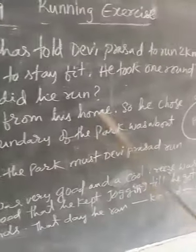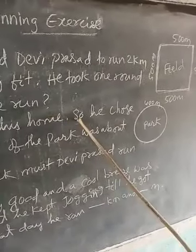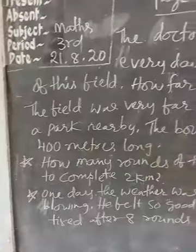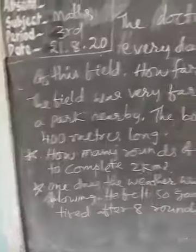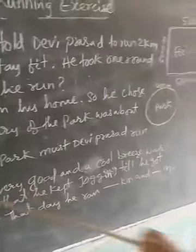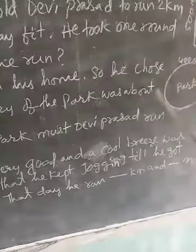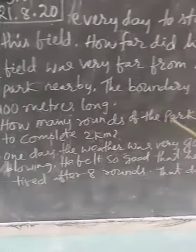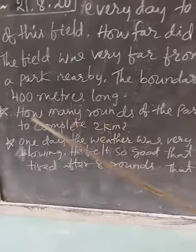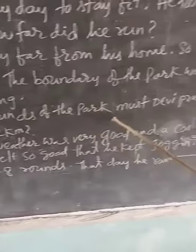The field was very far from his home, so he chose a park nearby. This is the park — it is near his home. The boundary of the park was about 400 meters long. So the total boundary length of the park is 400 meters. How many rounds of the park must Devi Prasad run to complete two kilometers? This is the question.